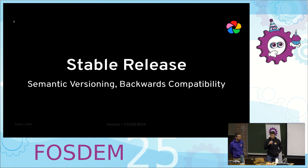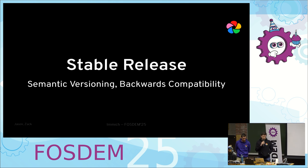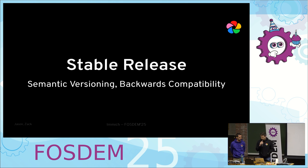Now I'm going to talk about a few of the things that are upcoming for Immich. The main one everyone wants to see is a stable release, including us. This will bring proper semantic versioning and backwards compatibility for apps. Right now we only keep a couple versions guaranteed working, but with a stable release all major versions will work — the kind of stuff you expect from a stable piece of software.